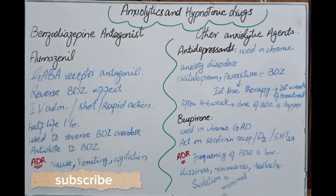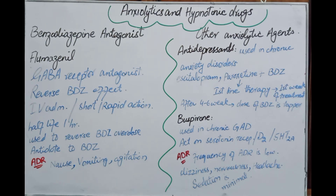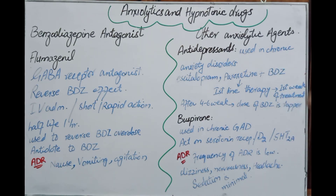Other anxiety agents include antidepressants, which are used for chronic anxiety disorders. The combination of antidepressants with low doses of benzodiazepines is first-line therapy for generalized anxiety disorder. In the first weeks of treatment, antidepressants are given with a loading dose of benzodiazepines. Once the antidepressant effect starts — after about 4–6 weeks — benzodiazepines are tapered to prevent withdrawal effects.